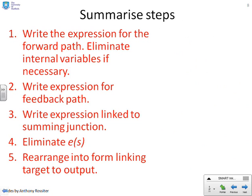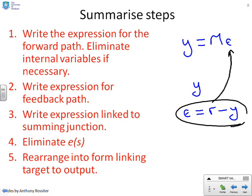So what we've done is we've said, first, write the expression for the forward path. And the expression for the forward path, in case you lost it, was y equals me. Now if there are internal variables, you might eliminate them, but in this case there aren't. Write an expression for the feedback path. Now in this case, the feedback path is just y. There's nothing else to write. Write an expression linked to the summing junction. Well this for the previous loop was e equals r minus y. And then it suggests that you eliminate e. Now clearly you can do that, if I mark it here, by taking this expression here and putting it in here. And therefore e will be eliminated. And then finally rearrange into a form linking the target to the output, which basically means write it as y equals something times r, which is just algebra. So what you've got here is a relatively systematic way of tackling loops. And we will show you with a couple of examples how you can do this.